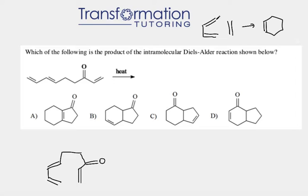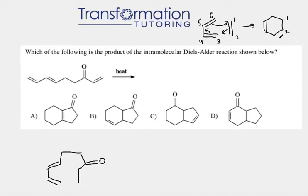Let's go ahead and show our arrows. The arrows can go either clockwise or counterclockwise — it does not matter. And we can also number the carbons 1, 2, 3, 4, 5, and 6.